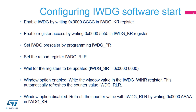Set the IWDG pre-scaler in the IWDG PR register by selecting the pre-scaler divider feeding the counter clock. Write the reload register, IWDG RLR, to define the value to be loaded in the watchdog counter.